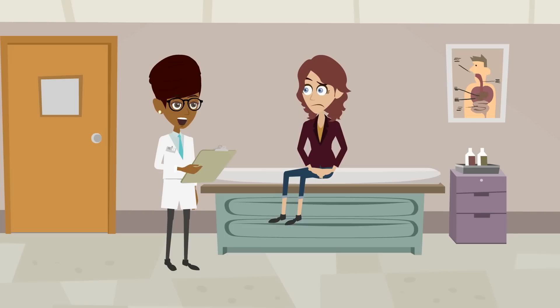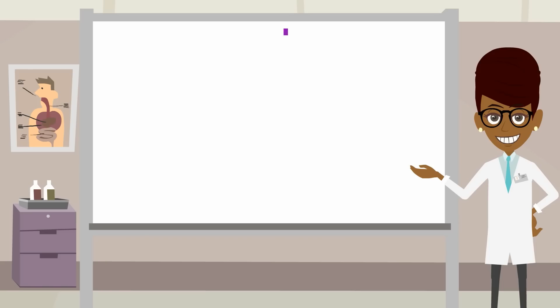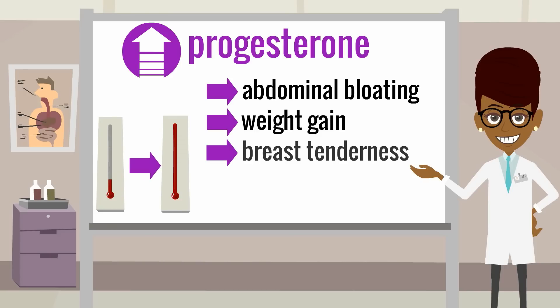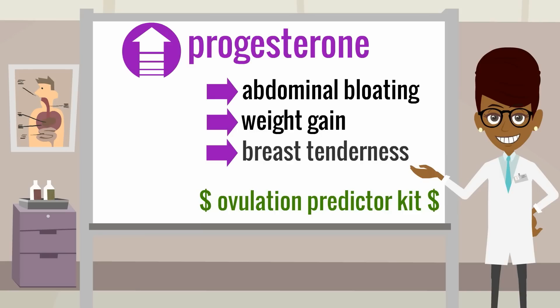Let's now move to female factors. First there needs to be production of a good oocyte. A good history can often help determine if a woman is ovulating each month. A history of regular, predictable menses suggests ovulatory cycles. After ovulation, there is an increase in progesterone, which can cause symptoms such as abdominal bloating, weight gain, and breast tenderness in the luteal phase. The progesterone causes a slight increase in body temperature, so women can monitor ovulation by checking their daily temperature, known as basal body temperature charting. Alternatively, women can purchase ovulation predictor kits, which assess ovulation based on increased LH production detectable in urine.